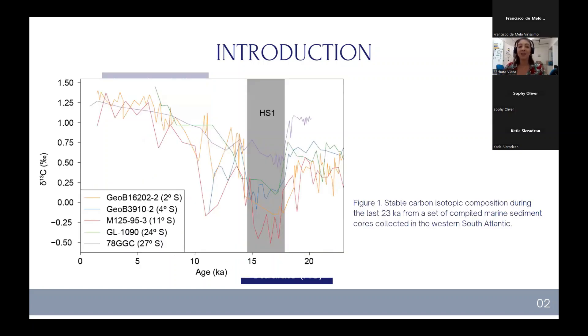These events were named after Heinrich in 1988 because he was the one who first described them studying marine sediment cores. And here, just to illustrate a little bit better, we compared these five marine sediment cores from previous work. Here we have the carbon-13 isotopic signature, and in this gray area we have the Heinrich stage 01, which has the negative anomaly that we want to investigate better.